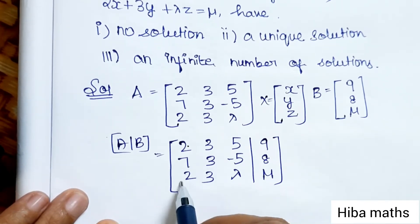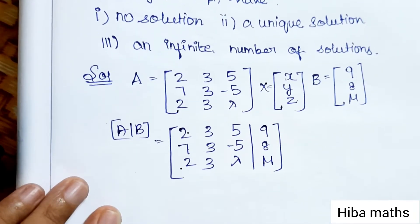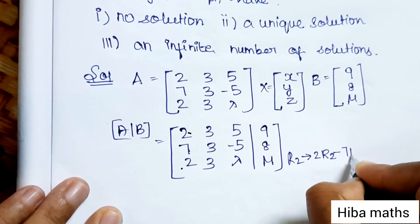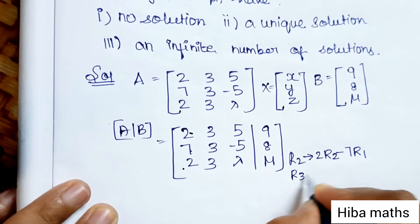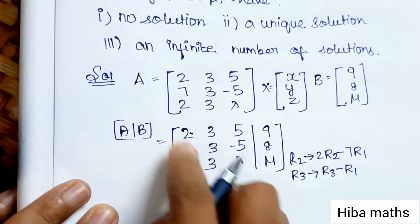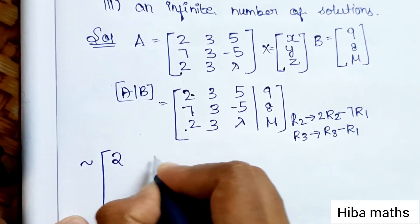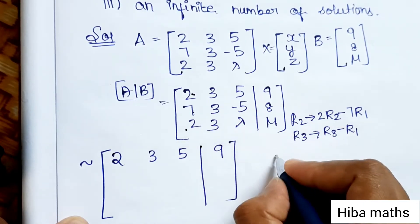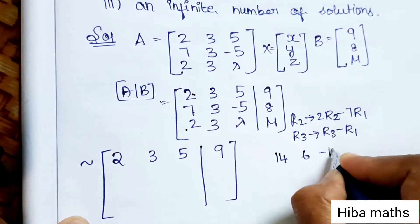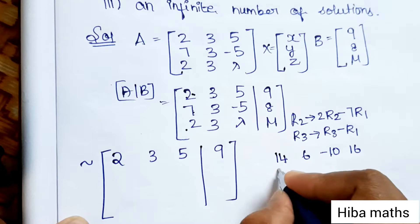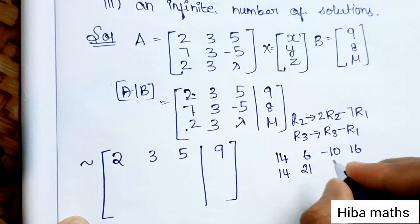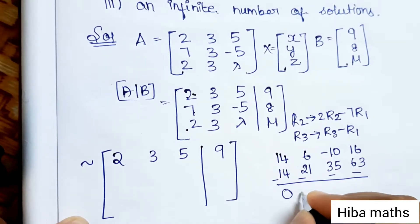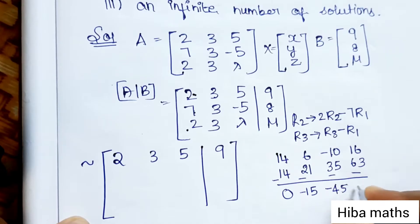We apply row operations. R2 changes to 2 times R2 minus 7 times R1, and R3 changes to R3 minus R1. Computing R2: 2×7=14, 2×3=6, 2×5=10 minus 7×2=14, 7×3=21, 7×5=35, 7×9=63. So R2 becomes: 0, -15, -45, -47.